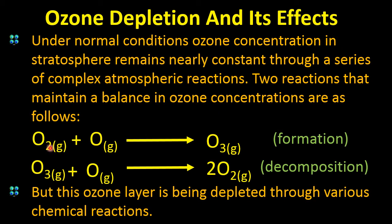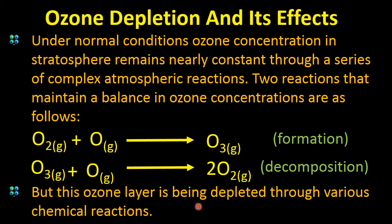Under normal conditions, ozone concentration in the stratosphere remains constant due to complex atmospheric reactions. Two reactions maintain this balance: when an oxygen molecule combines with an oxygen atom it forms ozone, and when ozone reacts again with an oxygen atom it gives back an oxygen molecule. So formation and decomposition both occur, but the ozone layer is also being depleted through various chemical reactions.